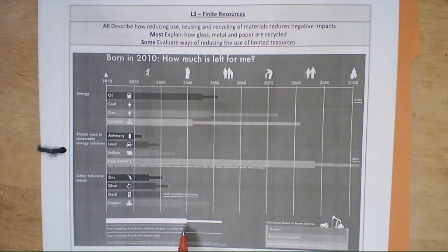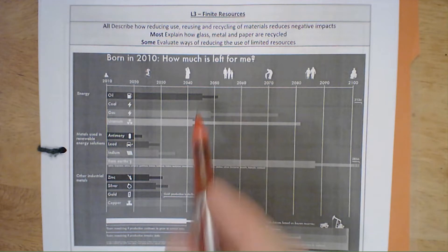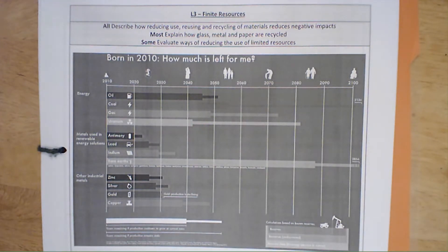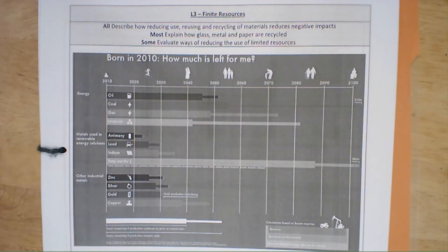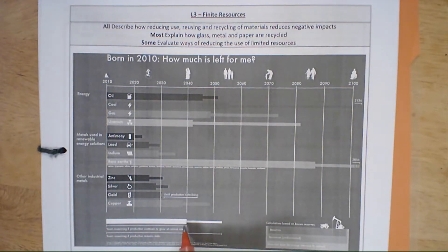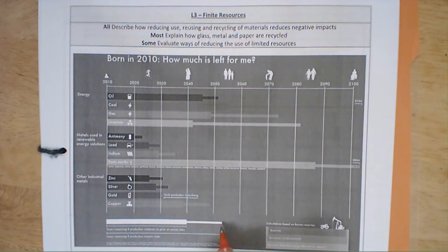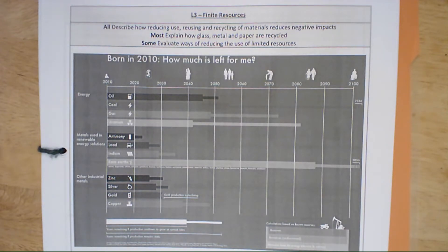You'll notice most resources have two end lines. The thick bar tells you how many years we have remaining, or the year we're projected to run out if the rate of consumption continues to grow at the current rate. The population is growing and year on year our consumption of oil is increasing. The thinner bar goes a little bit further and assumes the rate of consumption no longer changes.